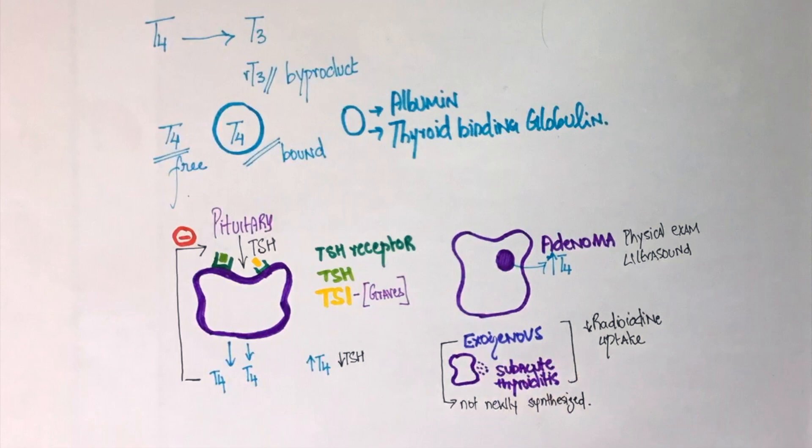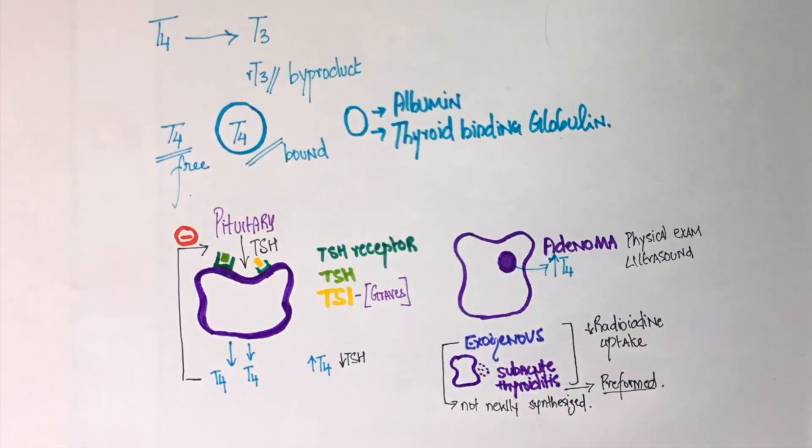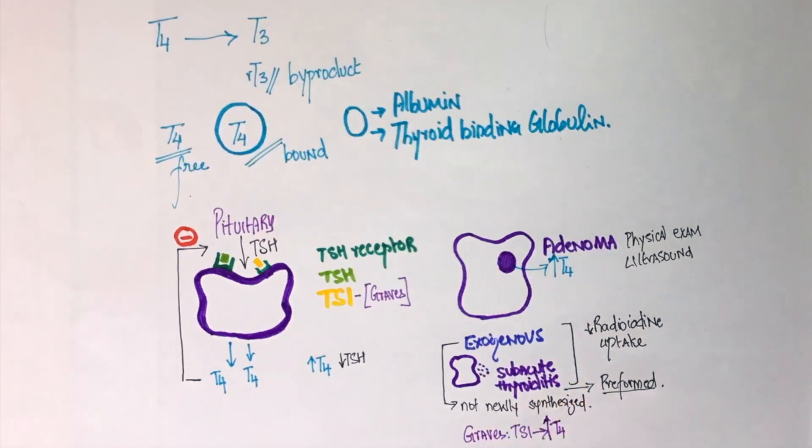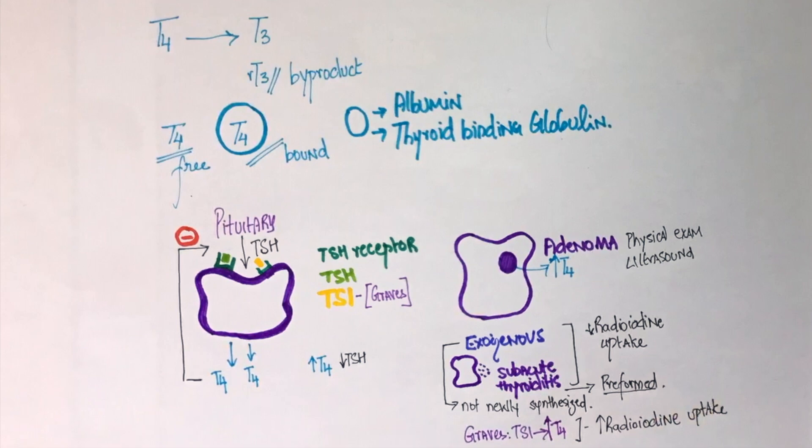Exogenous thyroid hormone administration decreases TSH levels by negative feedback leading to decrease in thyroid hormone synthesis by the thyroid gland. In case of subacute thyroiditis, there is a release of preformed thyroid hormone which leads to transient symptoms of hyperthyroidism. Whereas in Graves disease, the radioiodine uptake will be high. This is because thyroid stimulating immunoglobulin increases the synthesis of thyroid hormone by the thyroid gland. So although the TSH and free T4 levels are similar in all these diseases, they can be differentiated by different methods.